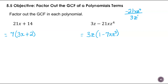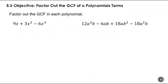Now factoring out the GCF in the next polynomial. We have a common factor of 3, and an X to the first in every term, so our GCF is 3X. Then: 9X² divided by 3X is 3; the next term divided by 3X gives just X; and negative 6 divided by 3 is negative 2, with X factored out leaving X squared. So the result is 3X(3 + X - 2X²).